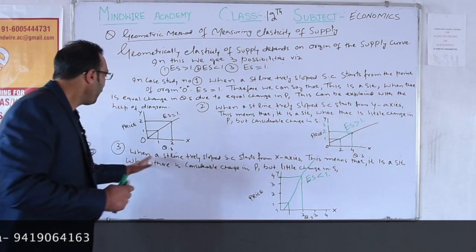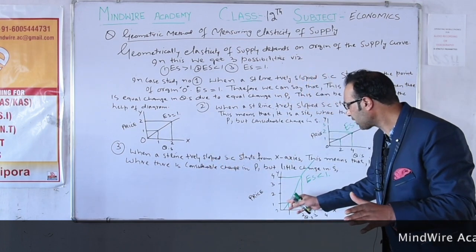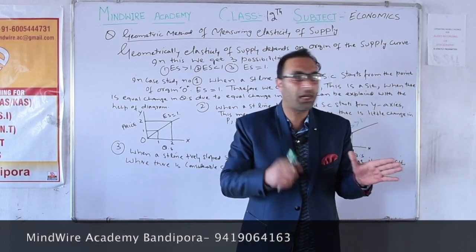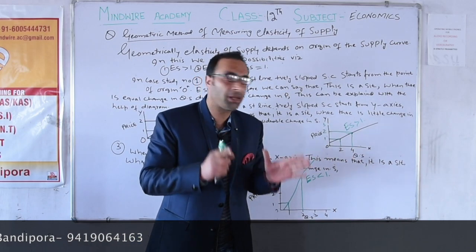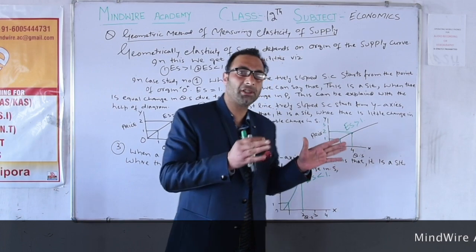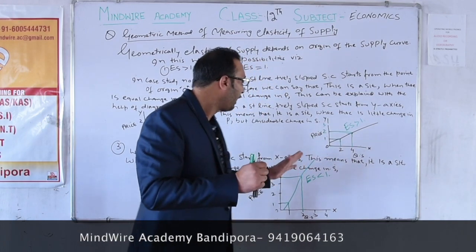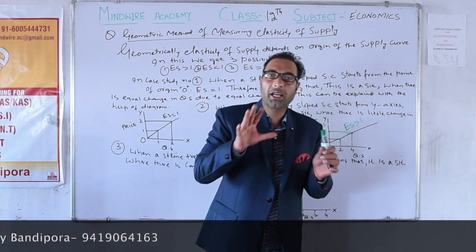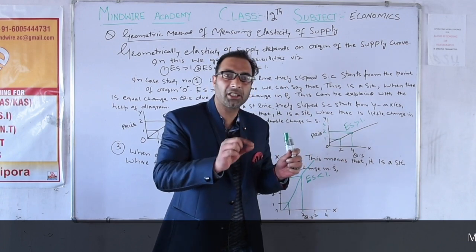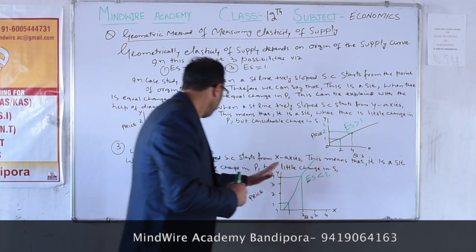In case number three, when a straight line positively sloped supply curve starts from the X-axis, at that time elasticity of supply is less than 1. Because the market continuously fluctuates — it never stays constant. Sometimes in this market, if price changes a lot — either increases or decreases greatly — but supply changes very little. In that situation, we call it elasticity of supply less than 1.